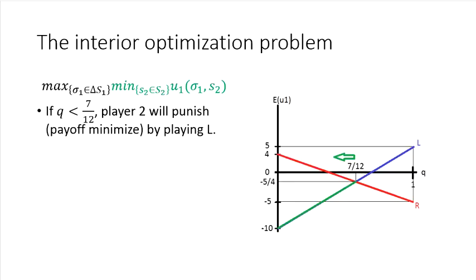Let's consider the inside here. And first thing we'll notice is if Q is lower than 7 over 12, if player two wanted to try to hurt player one, the best way she would do that is by playing L because it'll put player one's expected utility along the green portion of the L line there, which you'll note is below the red portion. So if she were to play R, it would give player one actually higher utility. So playing L is the optimal punishment in that sense.